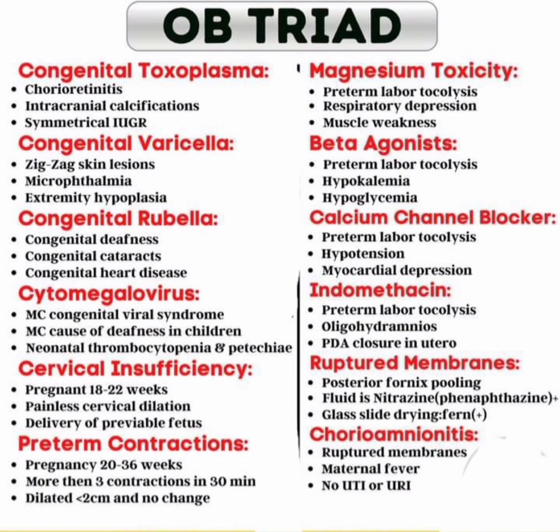Next, beta agonist triad: preterm labor tocolysis, hypokalemia, and hypoglycemia. Next, calcium channel blocker triad: preterm labor tocolysis, hypotension, and myocardial depression.